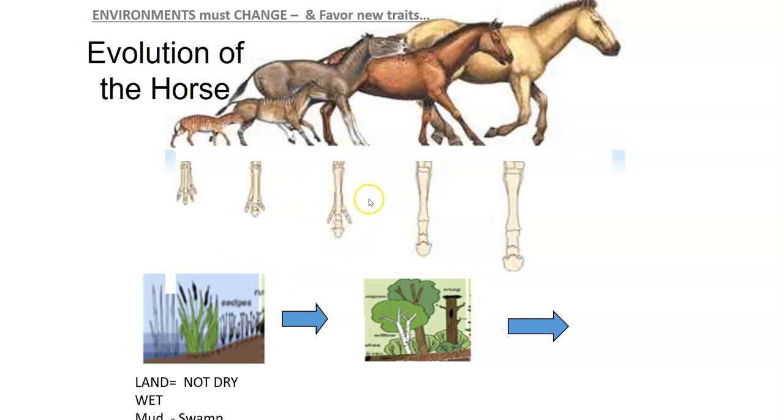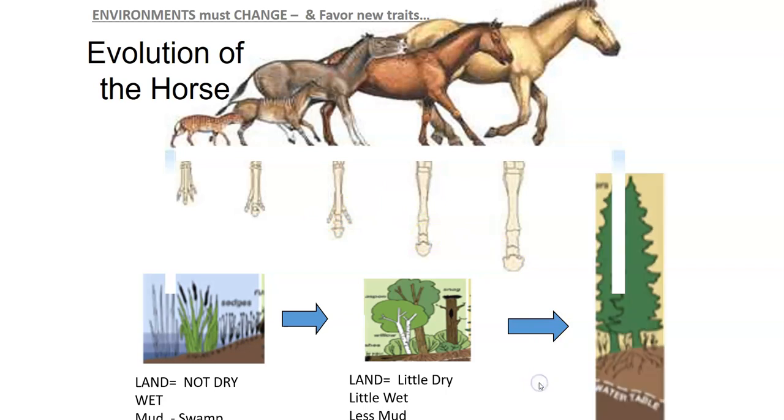Until eventually we have the horses of today who pretty much live on extremely dry, hard land. They don't really live in swamps at all. They run across prairies and they gallop. A horse today being born with those fingers would actually not be beneficial. The fingers would slow it down. It wouldn't be able to gallop as quickly and as gracefully as it does now.